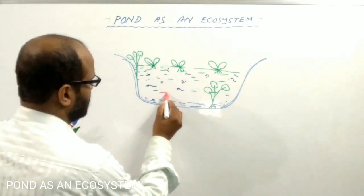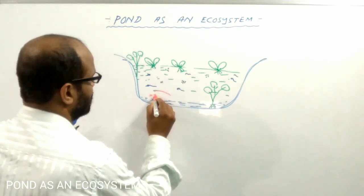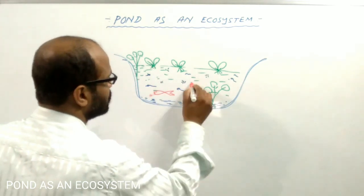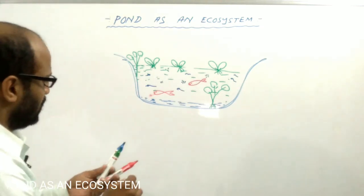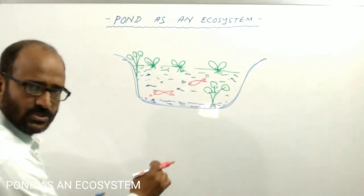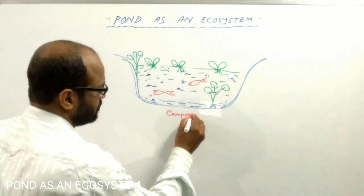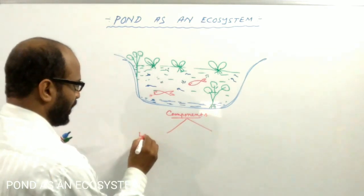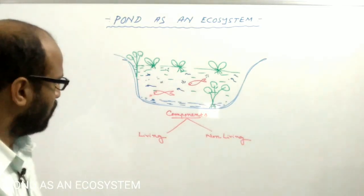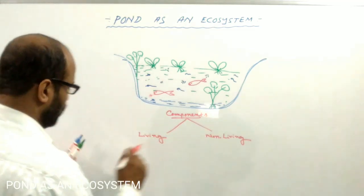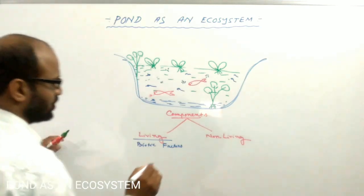Many animals are also present. Suppose that this is the fish. So here we can find that the pond is consisted of two types of components: one is the living component and another is the non-living component. So the pond has two components — one is living components and another is the non-living components.